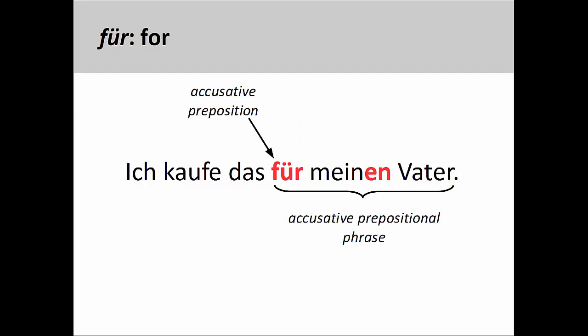The preposition für has the same meaning as the English 'for,' as you see in the sentence 'Ich kaufe das für meinen Vater' — I buy that for my father. The masculine accusative ending shows that everything in the prepositional phrase is in the accusative case.